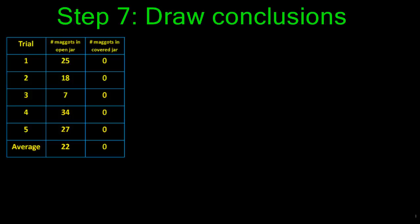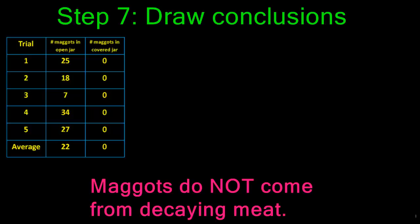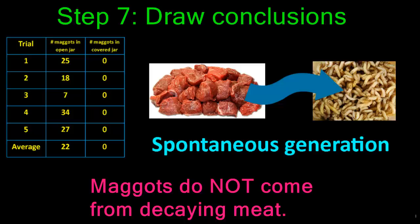In step 7 of the scientific method, you draw your conclusions. This is when you decide whether your data supports or disproves your hypothesis. In the case of Redi's experiment, his data supported the idea that maggots do not come from decaying meat, but rather from some other element in the environment, for example, flies. Based on this information, we can come to the conclusion that maggots do not come from decaying meat. Therefore, the idea of spontaneous generation was false.